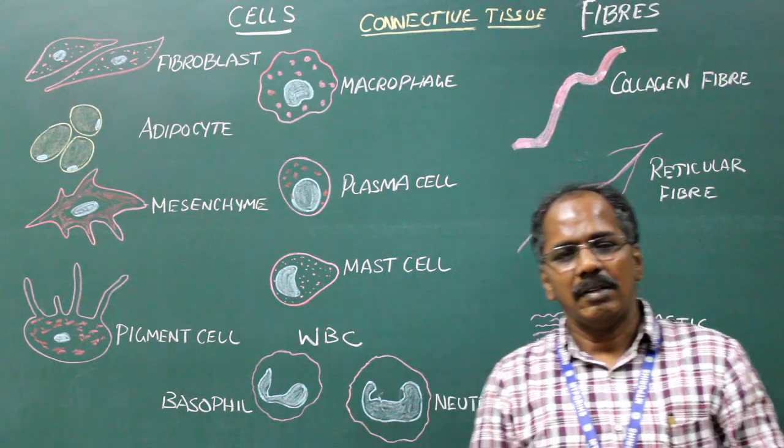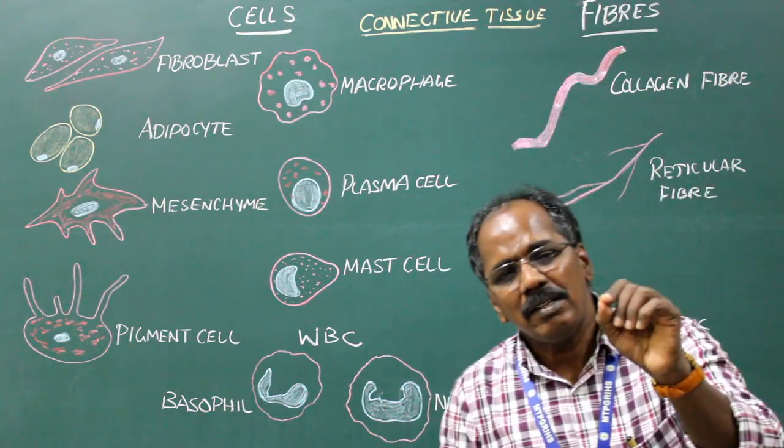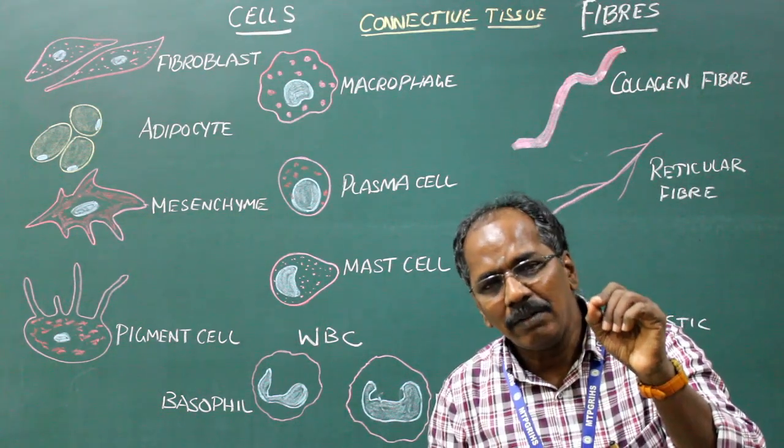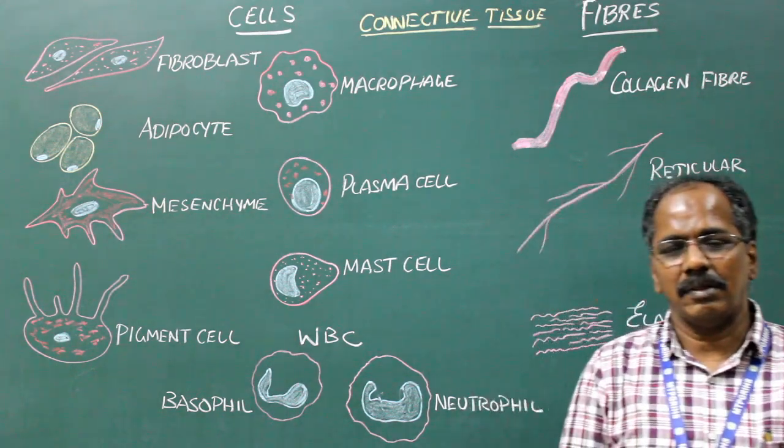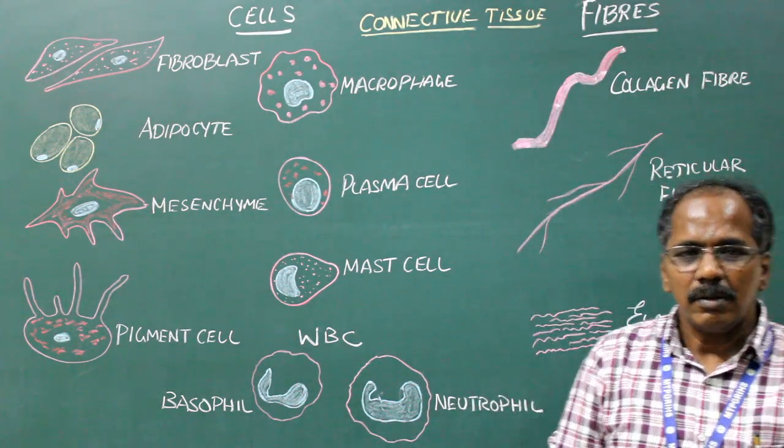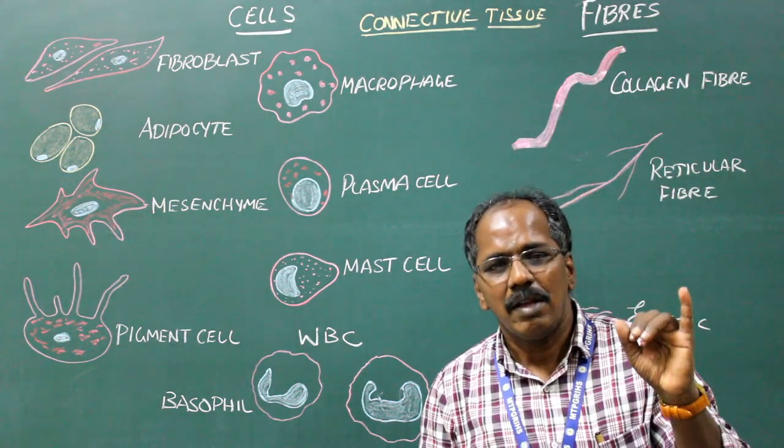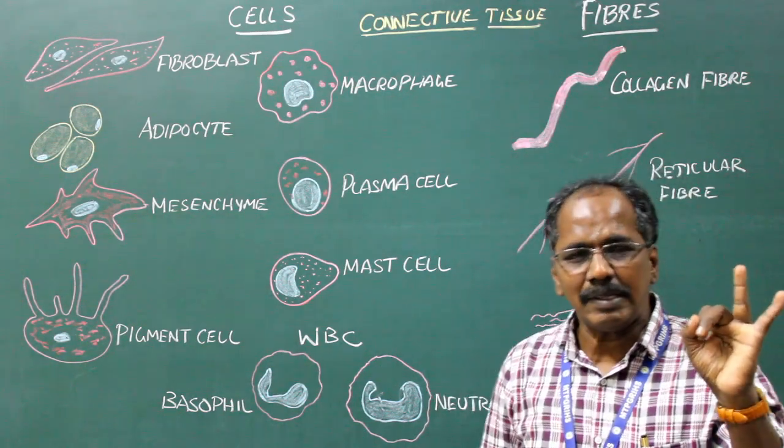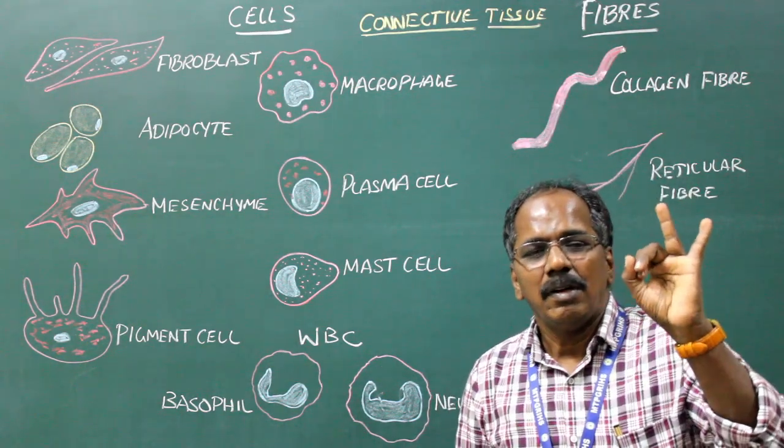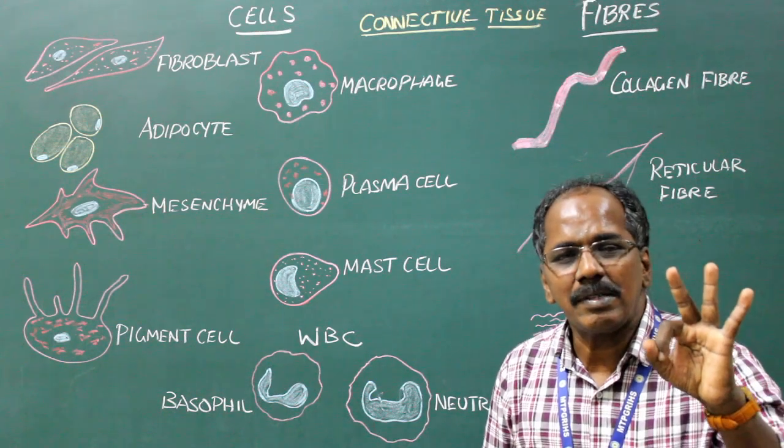Macrophage: It is a large cell having the property of phagocytosis. Examples: Kupffer cells in the liver, alveolar macrophage present in the alveoli of lungs, microglia in the central nervous system, macrophage present in the spleen and bone marrow.